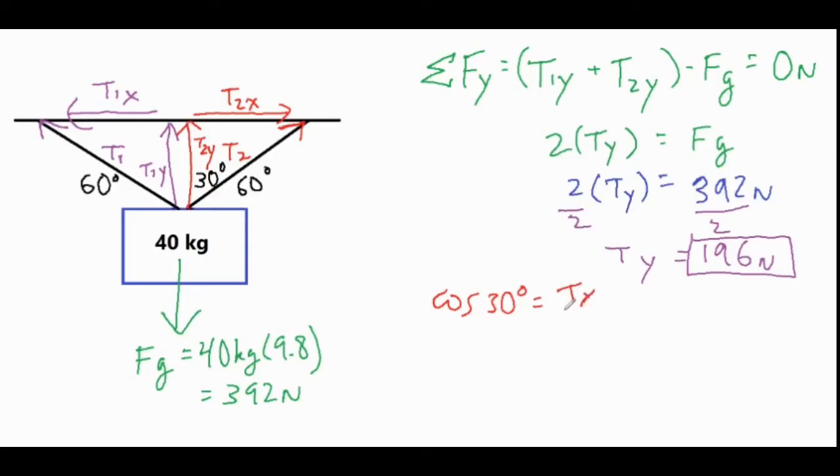We already know this one is 196. We can cross multiply these two, and that is T2 equals 196 newtons divided by cosine of 30 degrees. That gives us a T2 of 226.32 newtons.